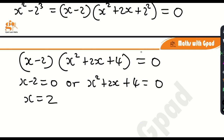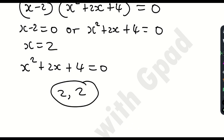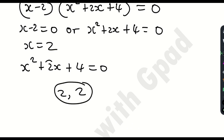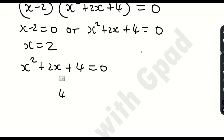Now for the quadratic equation, looking at it, it cannot be factorized. Even if you pick 2 and 2, they multiply to give 4, but when you add them you don't get 2. And if you use 4 and 1, 4 times 1 is 4, but 4 plus 1 does not give 2. So it cannot be factorized.